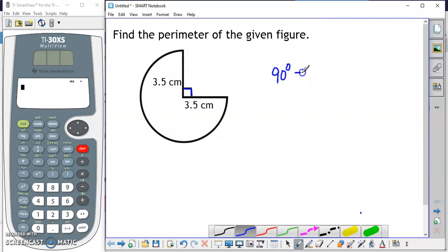90 degrees is one-fourth of 360 degrees. That means this portion that is missing is one-fourth of the entire circle.